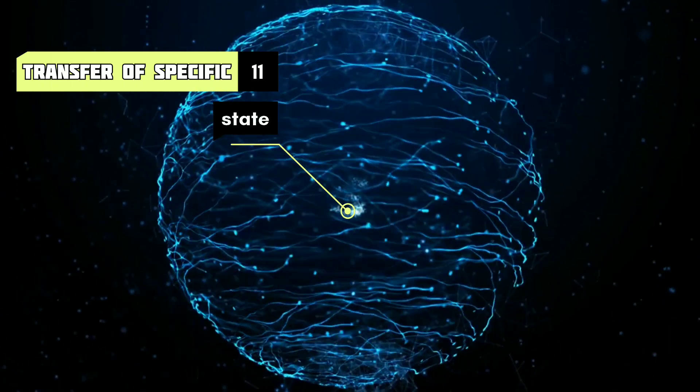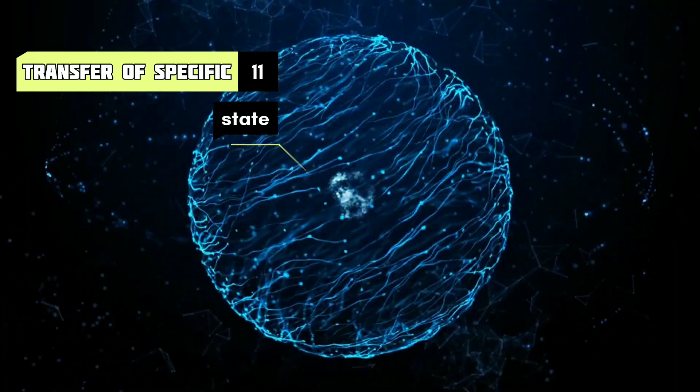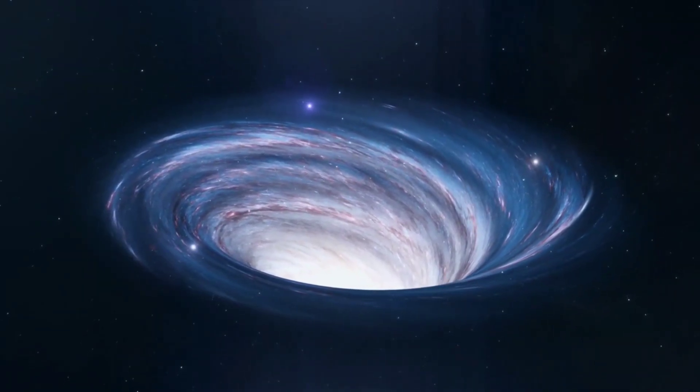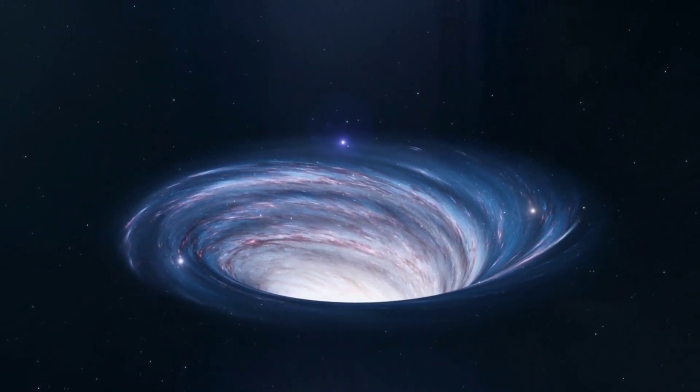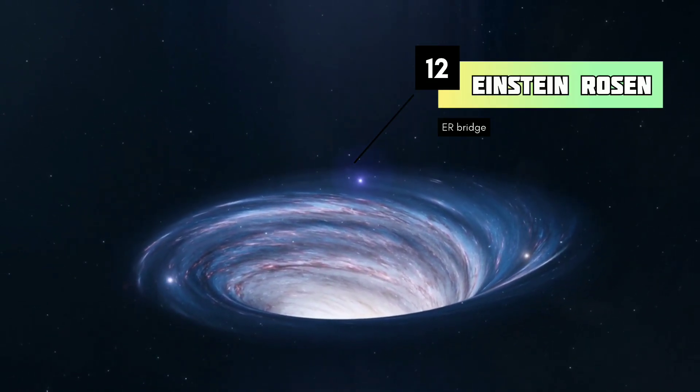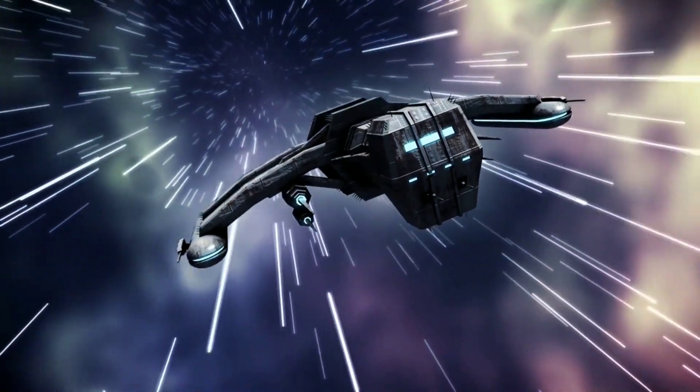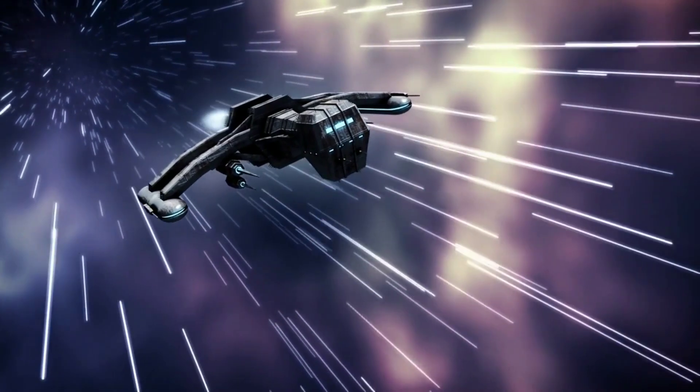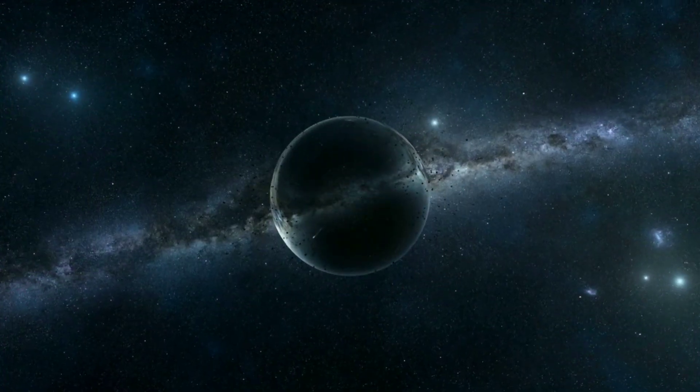Counterportation is a quantum form of counterfactual communication that results in the transfer of quantum information, much like teleportation. The obvious question is how. This is where a particular kind of Einstein-Rosen bridge or wormhole comes in, one hypothesized to represent the overlap or connection between entangled objects. This kind of local wormhole could act as the medium through which counterportation happens.